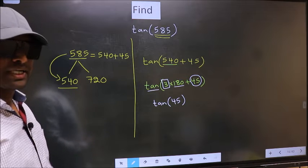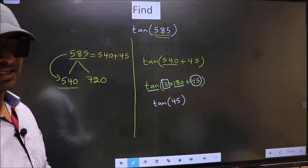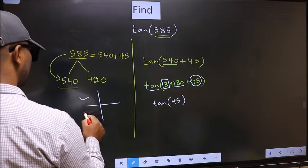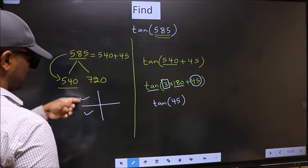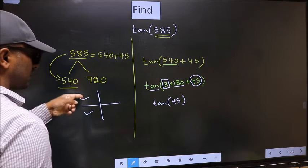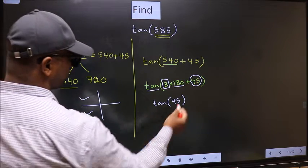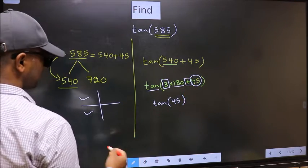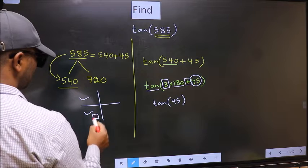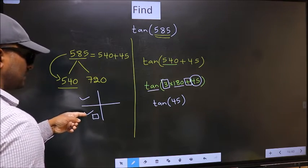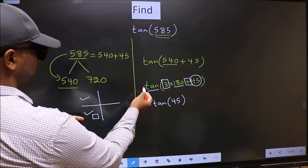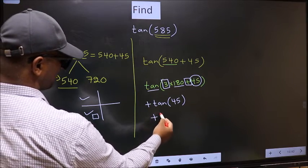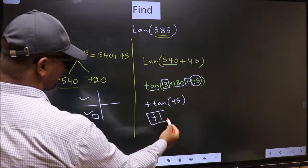And all the odd multiples of 180 lie either in the second or in the third quadrant. So, now to select the quadrant, we should look at this symbol. Here we have plus. That means the angle lies in the third quadrant. And in the third quadrant, tan is positive. So, we should put plus. So, plus tan 45 is 1. This is our answer.